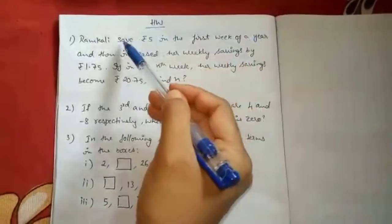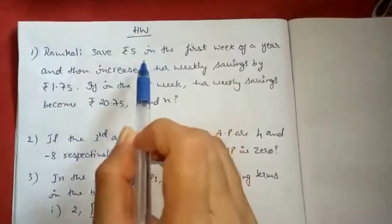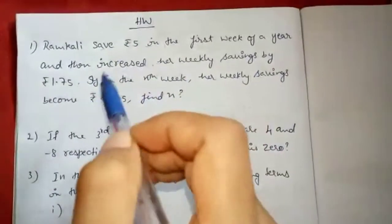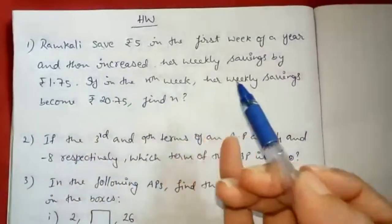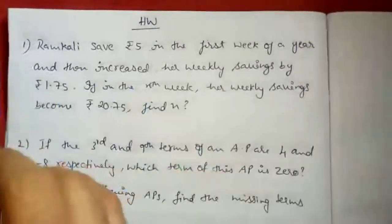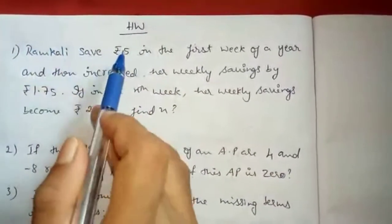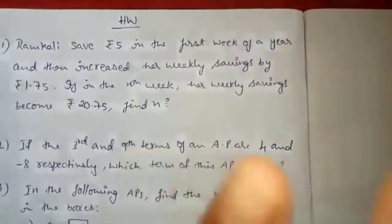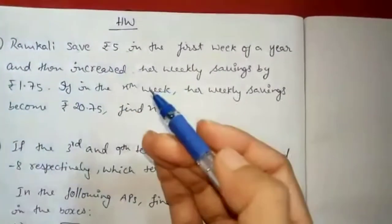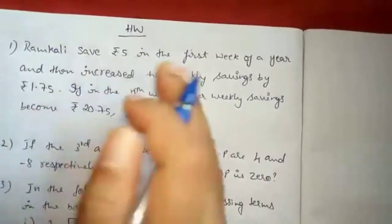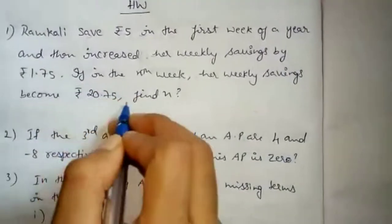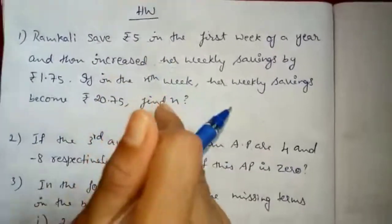Students, take down some homework questions. First question: Ramkali saved Rs. 5 in the first week of a year and then increased her weekly savings by Rs. 1.75. If in the nth week her weekly savings become Rs. 20.75, find n. So Ramkali saves Rs. 5 in the first week, it increases by Rs. 1.75 every week, and you have to find in which week it becomes Rs. 20.75.